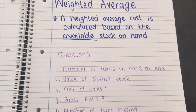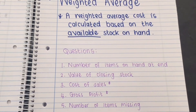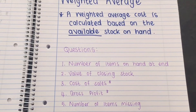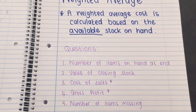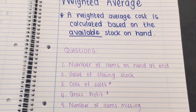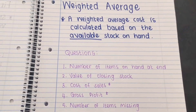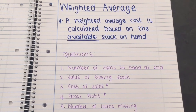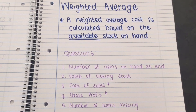The five questions are: the number of items on hand at the end of the month, the value of the closing stock, cost of sales, gross profit, and if they ask, the number of items missing.